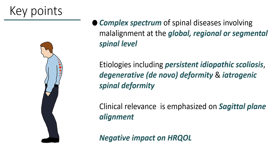In summary, adult spinal deformity is a complex spectrum of spinal diseases involving malalignment at the global, regional, or segmental spinal level in an adult, with etiologies that include persistent idiopathic scoliosis, degenerative de novo deformity, and iatrogenic spinal deformity. The clinical relevance of adult spinal deformity is emphasized on sagittal plane alignment, as patients' health status depends more on pathology associated with sagittal alignment. Adult spinal deformity is associated with a significant negative impact on health-related quality of life in affected individuals.